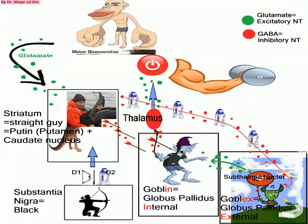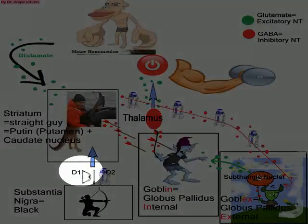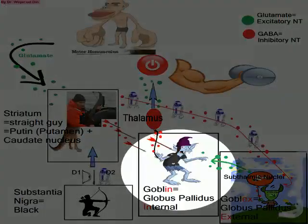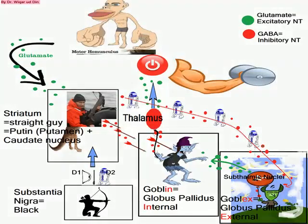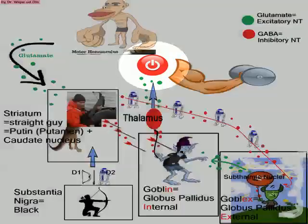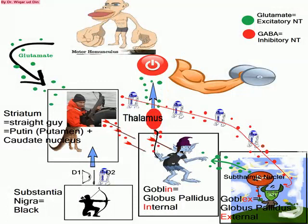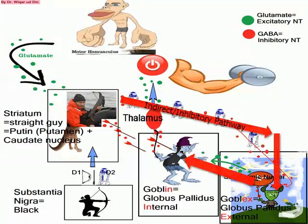From here the story can take two paths. If he uses D1 — the bow and arrow — he can shoot the goblin, and the goblin will let go of the balloon, which is the thalamus. The balloon will fly away and hit the power button, and a movement will be initiated. We call this the direct path, which is an excitatory pathway.